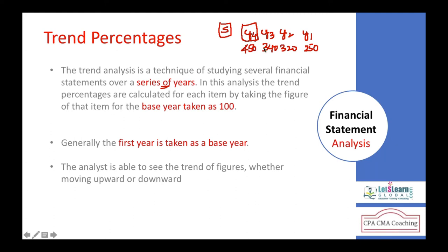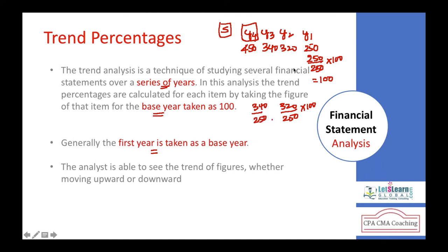We can find out the growth or downfall in a particular component of the statement for a period of years by calculating trend percentages. When calculating trend percentages, always take the base year as 100 — that is, 250 divided by 250 times 100 equals 100. The next year's trend is 320 divided by 250 times 100; third year is 340 over 250 times 100; fourth year is 450 divided by 250 times 100. The base year amount is always constant in the denominator.